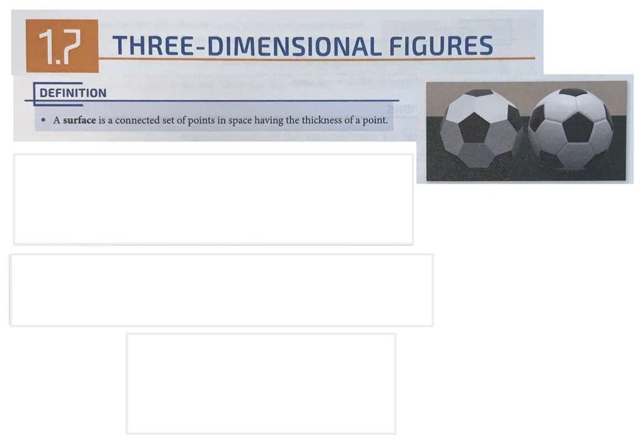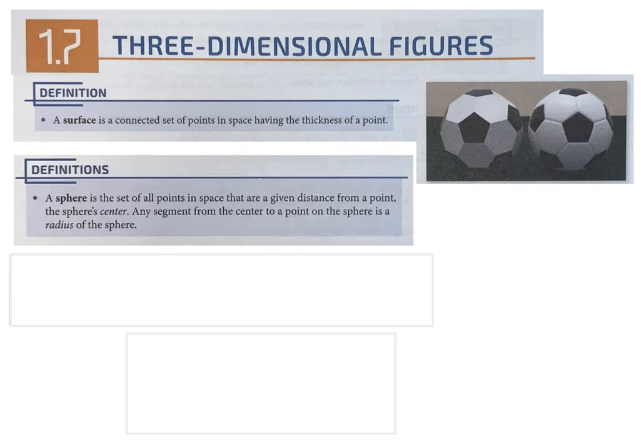A sphere is a set of all points in space that are a given distance from a point — the sphere's center. Any segment from the center to a point on the sphere is called the radius. This is different from a circle. In a circle, it is the set of points equidistant from the center in the plane, so a circle is a flat figure. A sphere is three-dimensional.